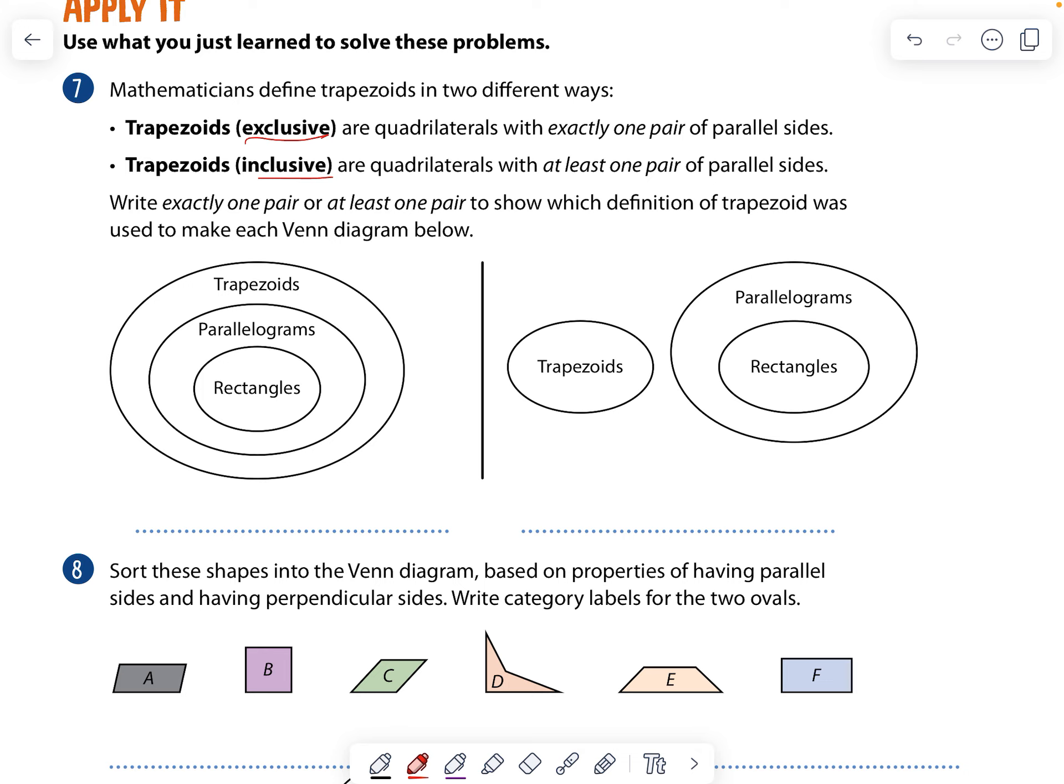Okay. Exclusive and inclusive. Exclusive are quadrilaterals with exactly one pair of parallel sides. Trapezoids that are inclusive have quadrilaterals with at least one pair of parallel sides. I read that wrong. Okay. So this one's exactly, and this one is at least one pair. Write exactly one pair or at least one pair to show the definition of the trapezoid in each of these. Okay. So parallelograms and rectangles and such have at least one pair. I'm sorry if this is not making any sense, guys. I will fix everything on Thursday. Okay. And this one's exactly.